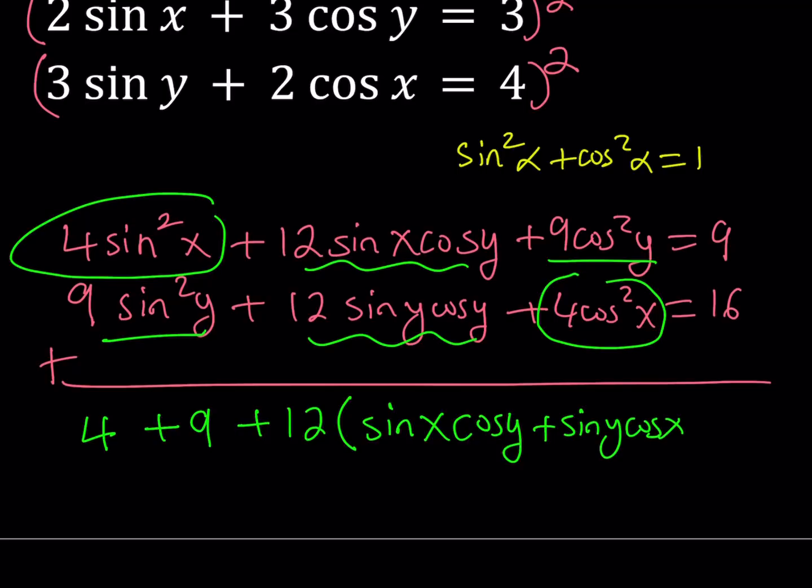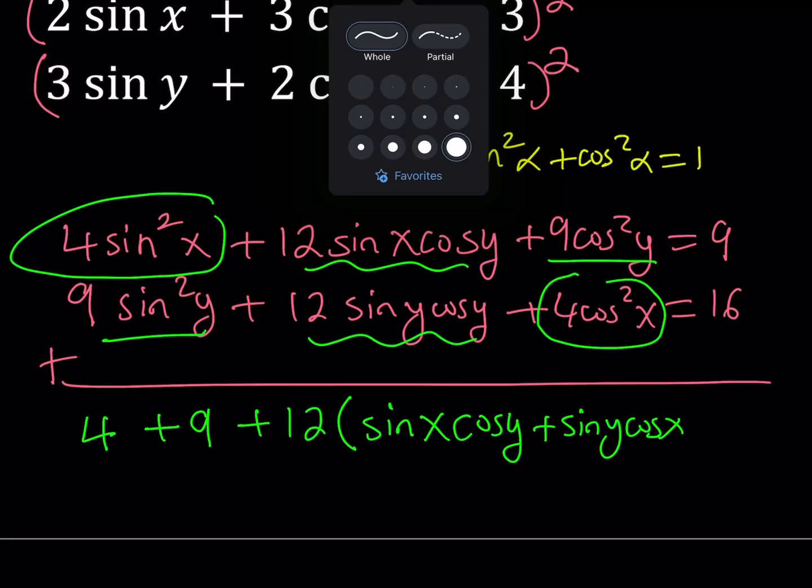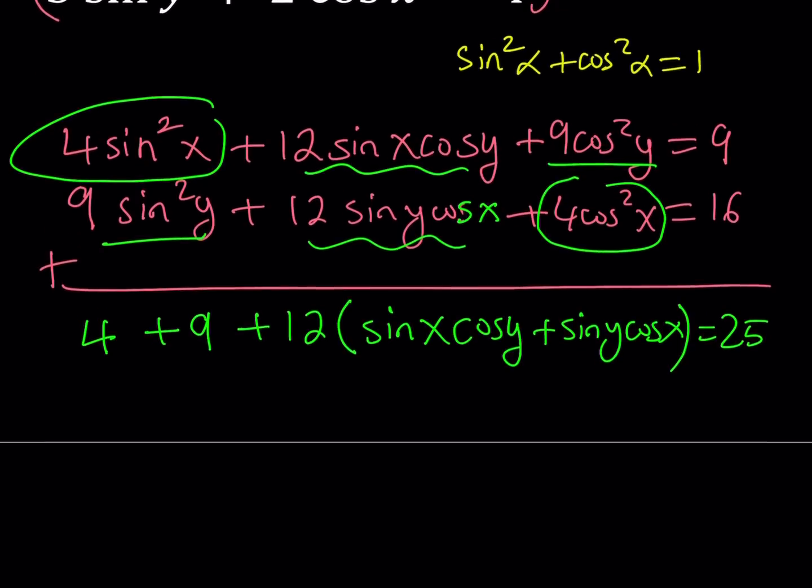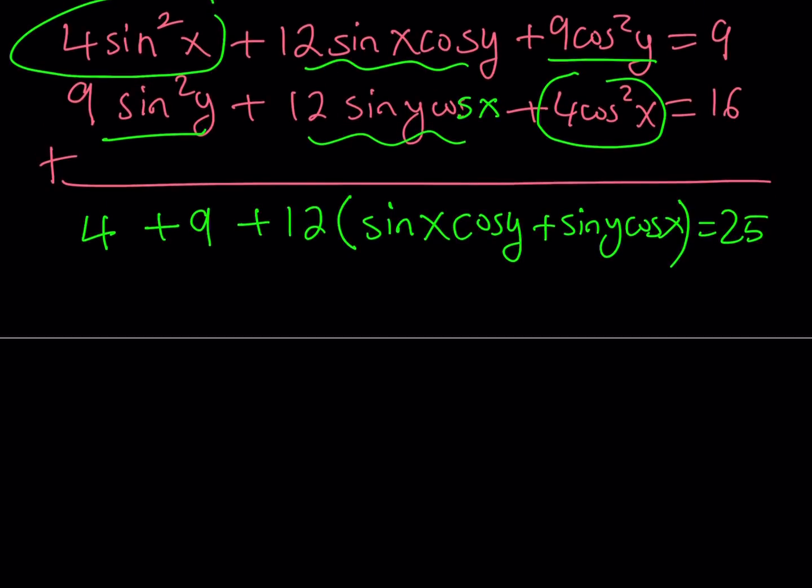Sine x cosine y plus sine y cosine x. By the way, this should be a cosine x, not a cosine y. Let's go ahead and fix that. This should be a cosine x. And that should give me sine y cosine x. Then on the right-hand side, I have 9 plus 16, which equals 25. So 4 plus 9 equals 13. If I subtract 13 from 25, I get 12.